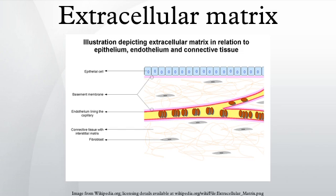Fibronectins are glycoproteins that connect cells with collagen fibers in the ECM, allowing cells to move through the ECM. Fibronectins bind collagen and cell surface integrins, causing a reorganization of the cell cytoskeleton and facilitating cell movement. Fibronectins are secreted by cells in an unfolded, inactive form.